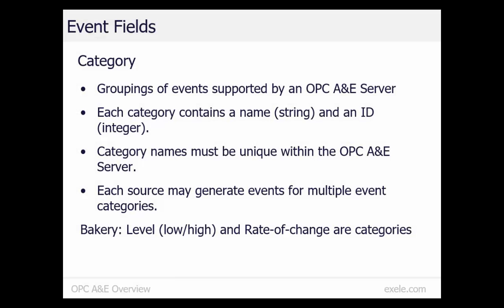Category is a grouping of events supported by the OPC A&E server. In our bakery example, we have a level category for our low and high alarms, and a rate of change category for the rate of change alarms. Each category contains a name, but internally there's both a name and an ID number, and the category names must be unique within the server.